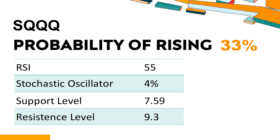What technical factors drive SQQQ performance? SQQQ's 14-day Relative Strength Index (RSI) value was 55. When the RSI is between 50 and 70, it generally indicates that the stock is moderately bullish. This means that the security's price has been rising but has not yet reached overbought levels, which are usually considered an RSI reading of 75 or higher.